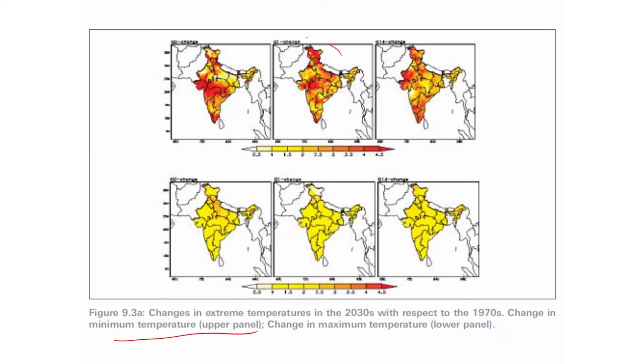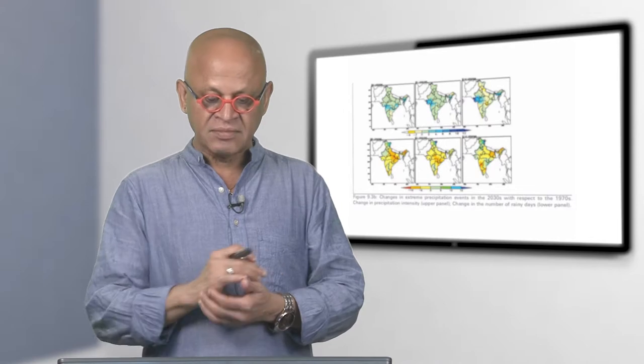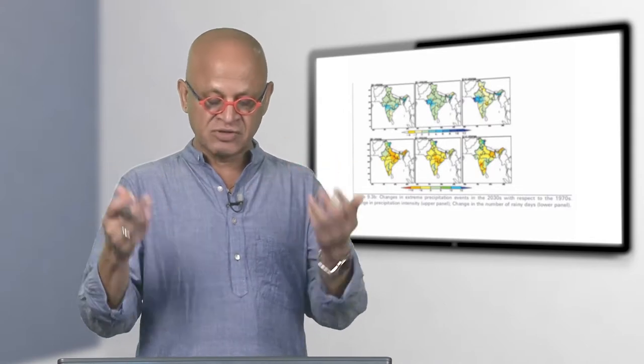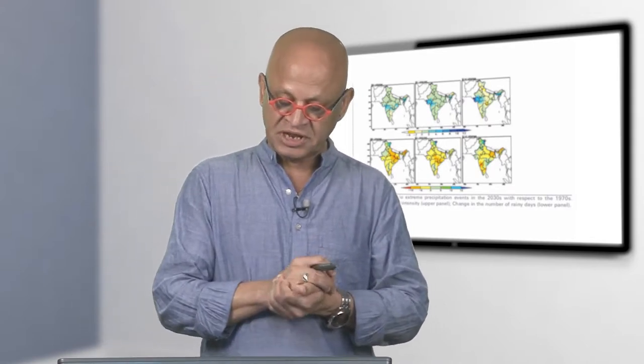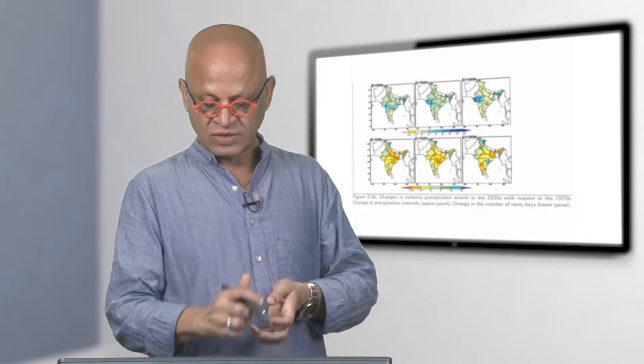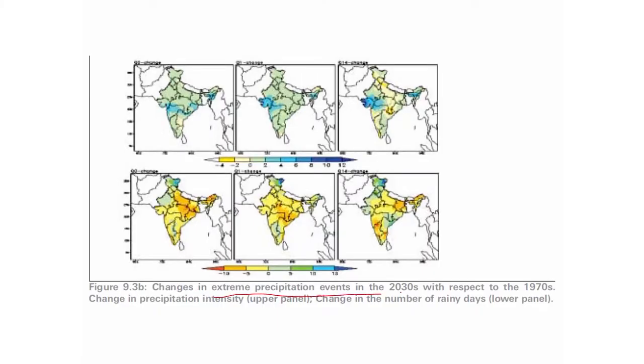Keeping that in mind, the change in minimum temperatures are expected to increase much more than the changes in maximum temperatures. Already, we are pretty warm, you cannot get much warmer because then you will begin to have wind changes, precipitation changes and so on.